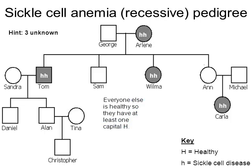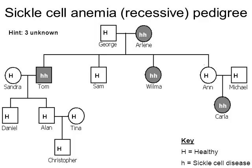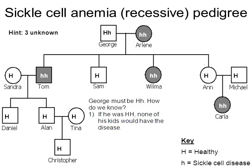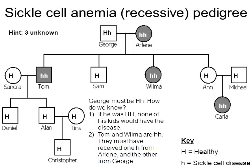Everyone who's not colored in is healthy, so they have at least one capital H. Let's focus on George — he has to be heterozygous. If George were homozygous dominant, he would give every child a capital H, and none of the kids would have the disease. Another clue: his children Tom and Wilma each have the disease with two lowercase h's — one had to come from mom Arlene, the other from dad George.